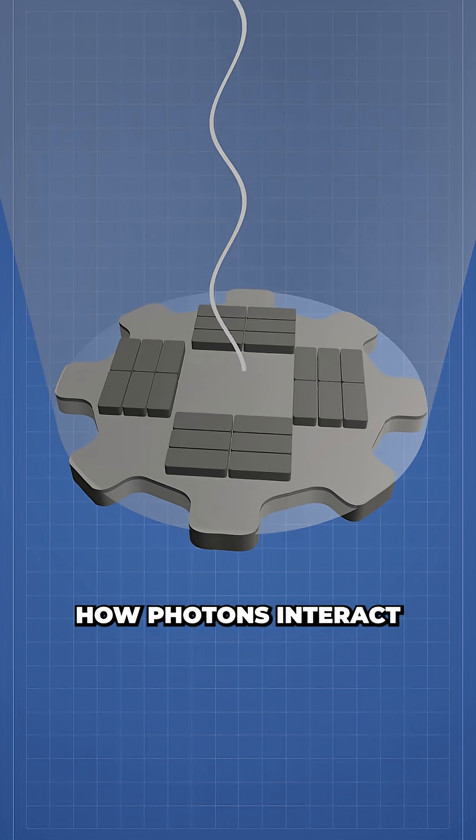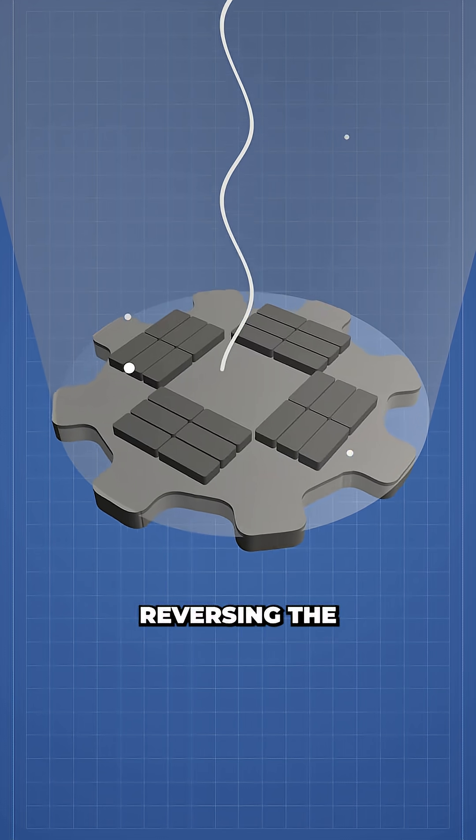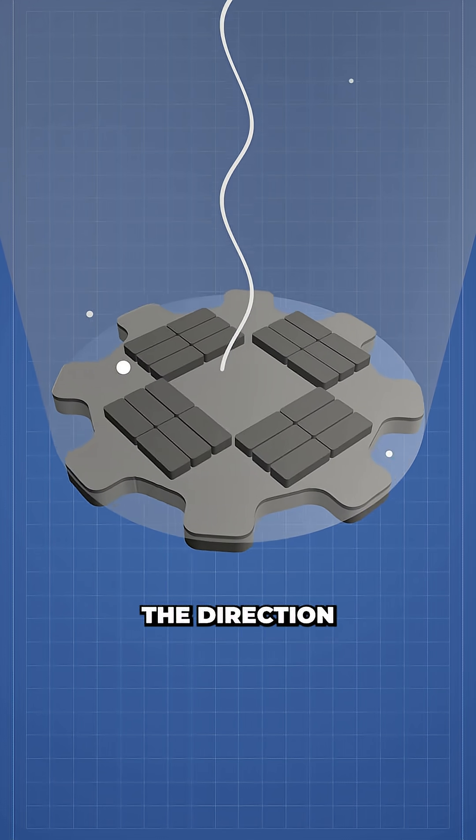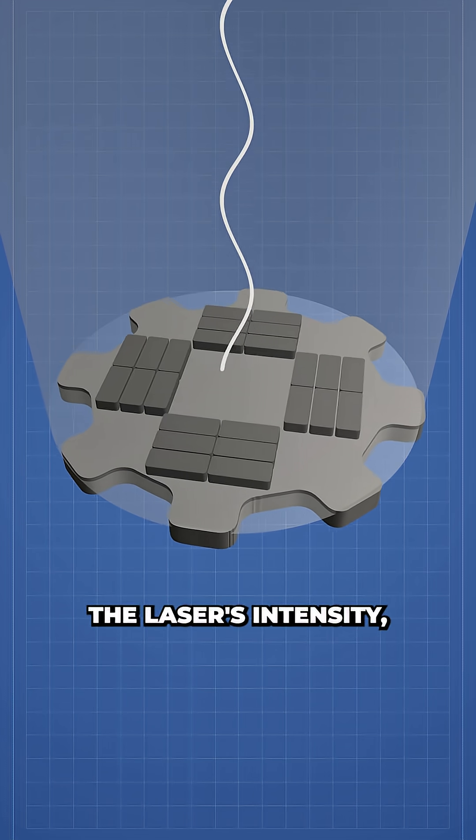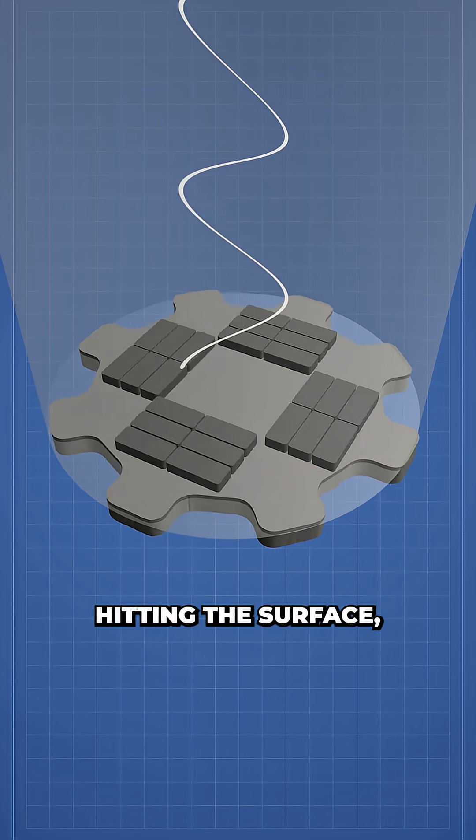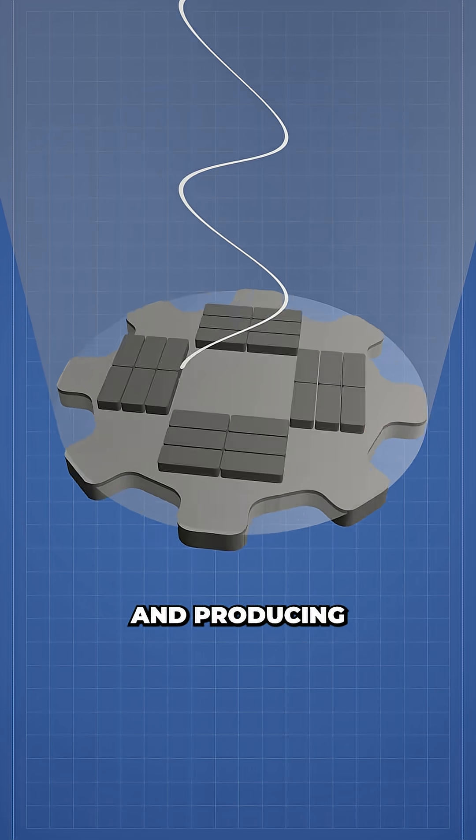Changing the light's polarization flips how photons interact with the metasurface, reversing the scattering bias, and with it, the direction of rotation. And finally, by increasing the laser's intensity, it increases the number of photons hitting the surface, generating more force, and producing a faster spin.